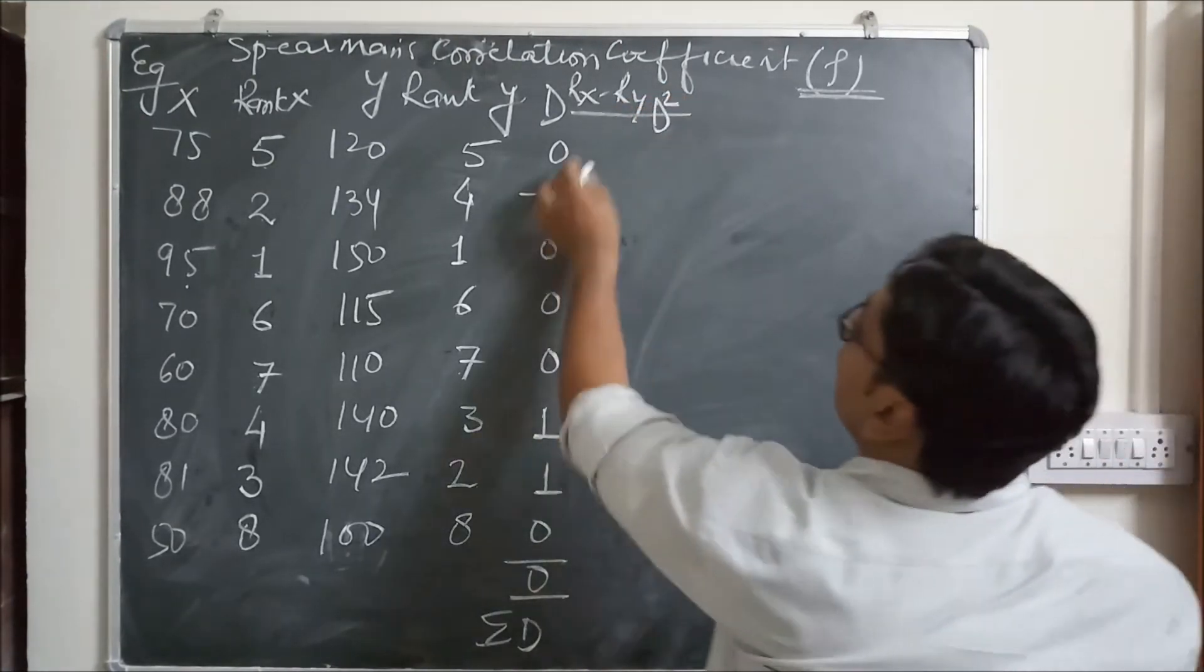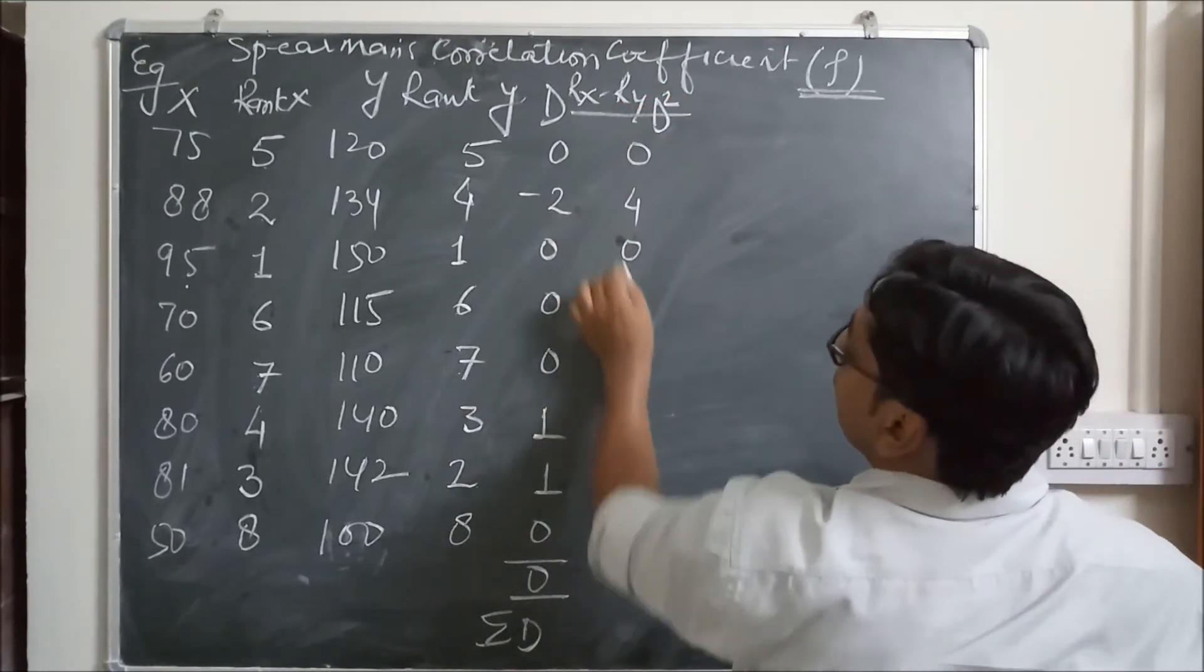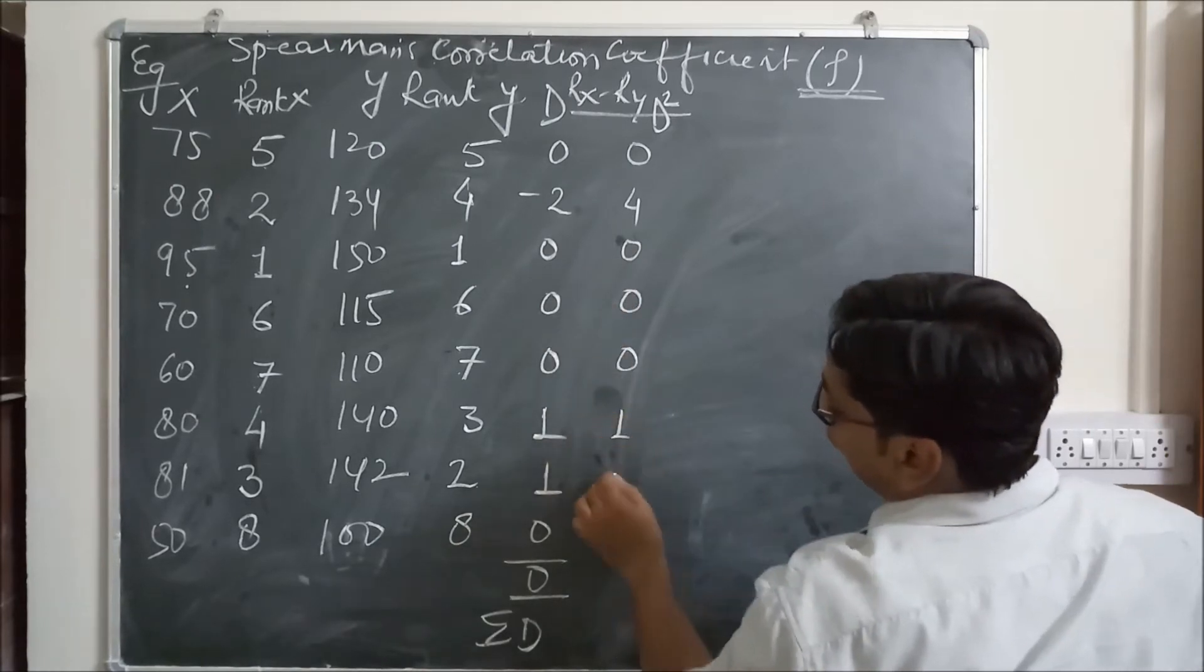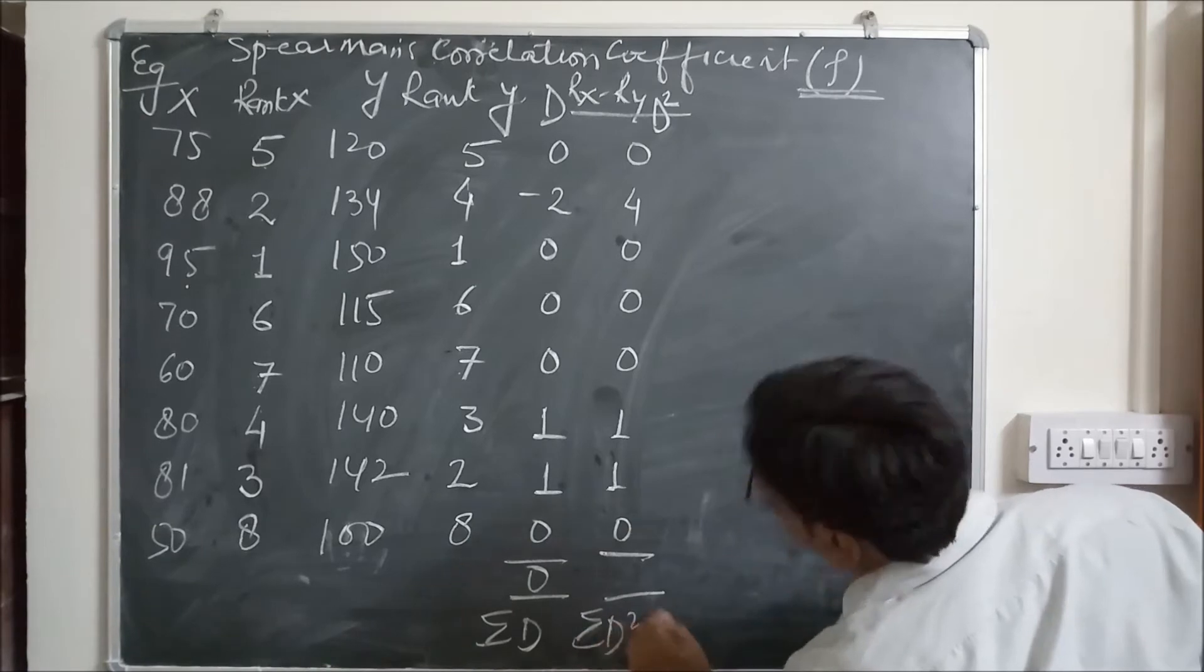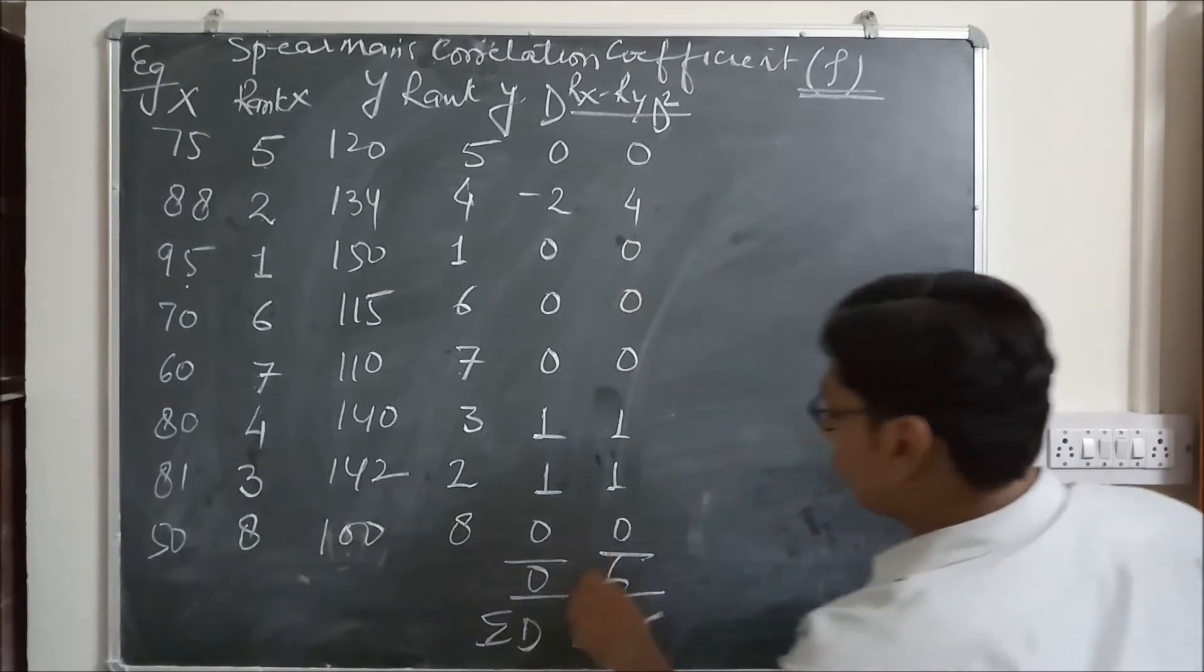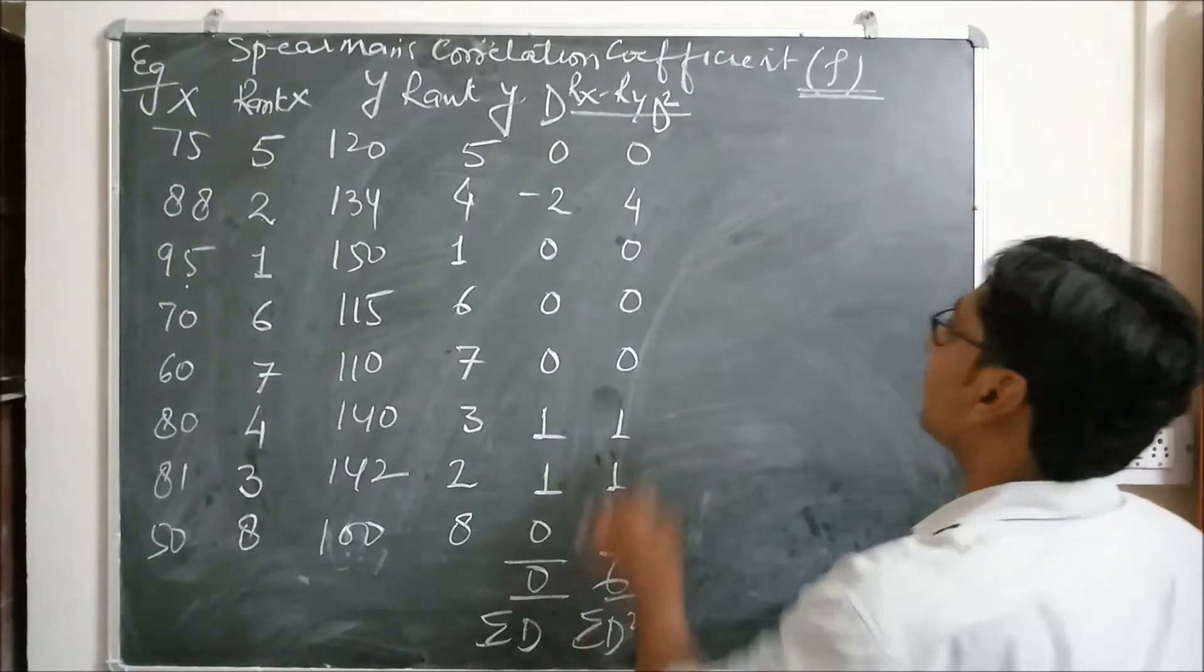Now make its square. D square: 0, 4, 0, 0, 0, 1, 1, 0. Now it comes sigma D square. 4 and 2 is 6. The total of D square is 6.